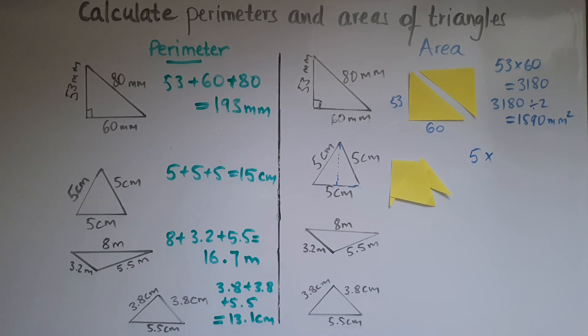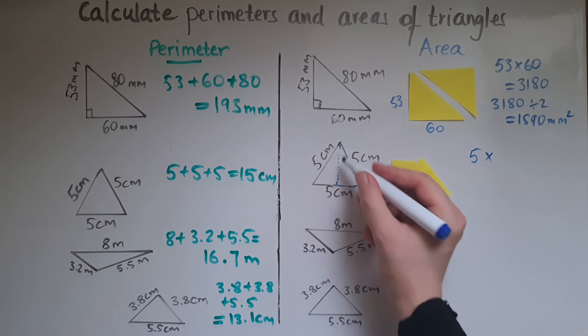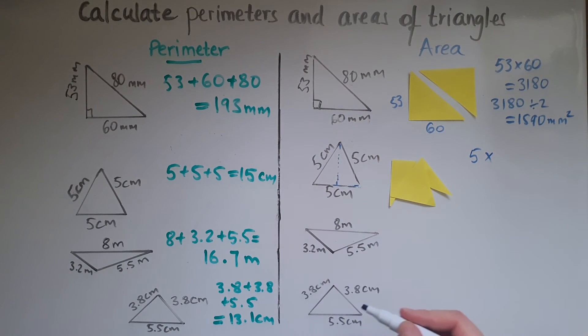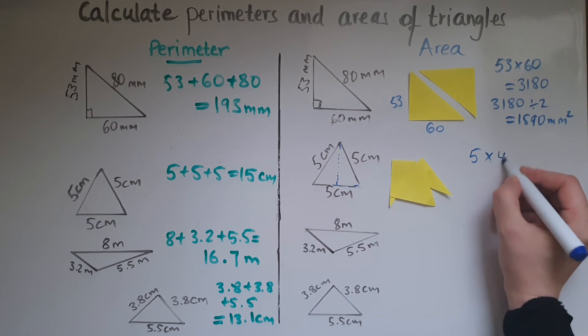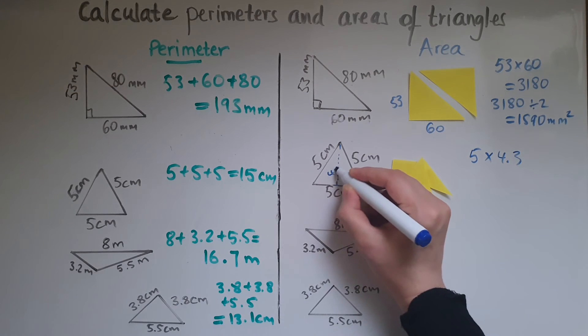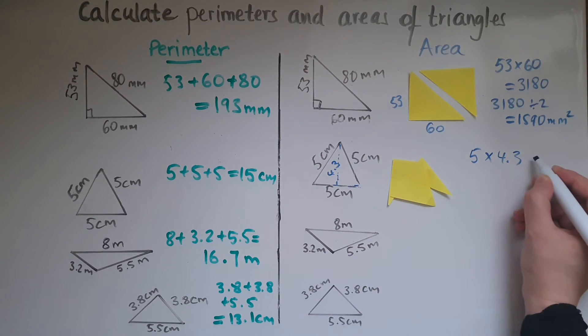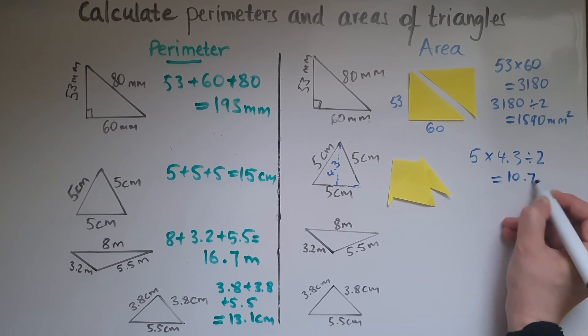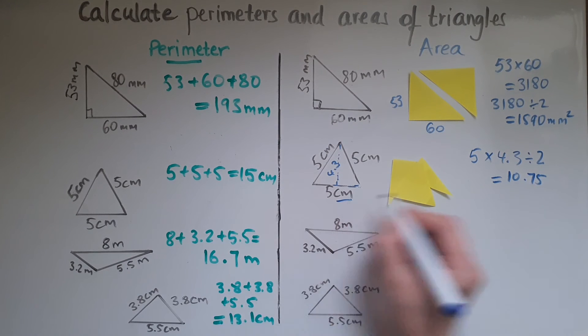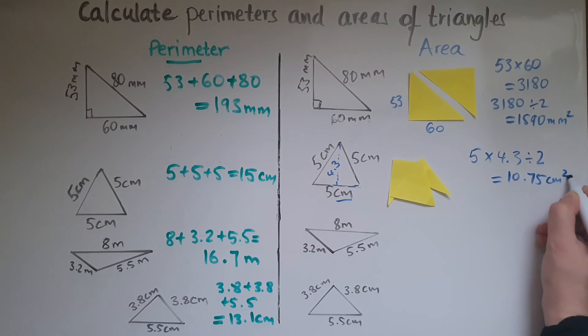So at this level, you're not required to work it out using any other formula. All you have to do is measure it. So by measuring it, you'd get 4.3. So 5 times 4.3 and then divide that by 2 to give us 10.75 centimeters squared.